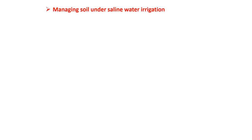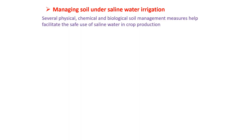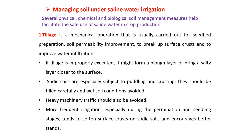It is important to know how to manage soil under saline water for irrigation purpose. There are different physical, chemical and biological soil management measures to facilitate the safe use of saline water in crop production. Tillage is a mechanical operation usually carried out for seedbed preparation, improving soil permeability, breaking up surface crust and improving water infiltration. If tillage is improperly executed, it might form a plow layer or bring a salty layer closer to the surface. Sodic soils are especially subject to puddling and crusting; they should be tilled carefully and wet soil conditions avoided. Heavy machinery traffic should also be avoided due to compaction of soil structure.